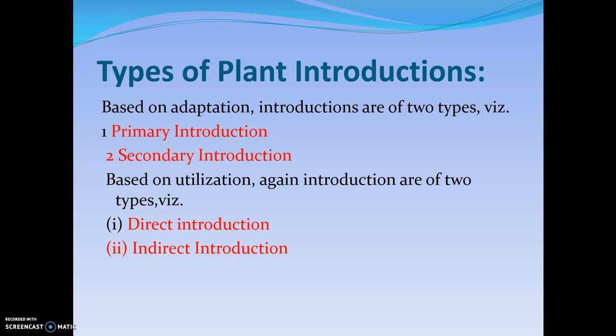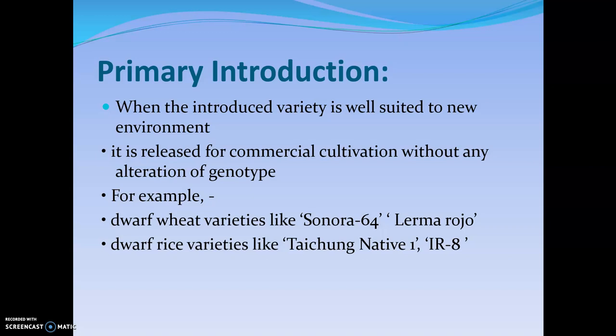Plant introduction is of two kinds. Based on adaptation, introduction may be primary or secondary introduction. Based on utilization, it can be direct introduction or indirect introduction. Primary introduction is when the introduced variety is well suited to the new environment and is released for commercial cultivation without any alteration of genotype. For example, dwarf wheat varieties like Sonora 64, Lerma Rojo, and dwarf rice varieties like Taichung Native 1 and IR 8.